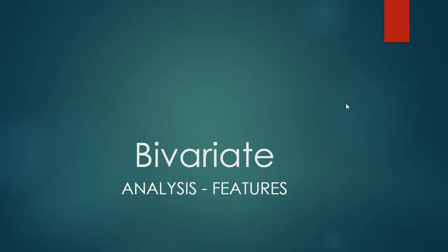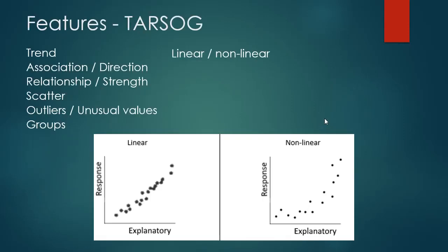This video is about the analysis of features of a bivariate data plot. The features are known by the acronym TASOG. There are six different features we're looking for: the trend, the association (also called the direction), the relationship (also called the strength), the scatter, the outliers (also called unusual values), and the groupings.